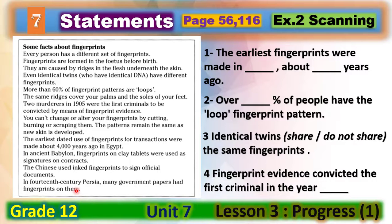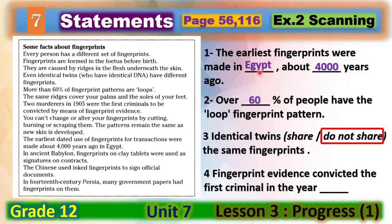Welcome back. Let's check your answers. Number one: the earliest fingerprints were made in Egypt, about four thousand years ago. Number two: over 60% of people have the loop fingerprint pattern. Number three: identical twins do not share the same fingerprints. Number four: fingerprint evidence convicted the first criminal in the year 1905.